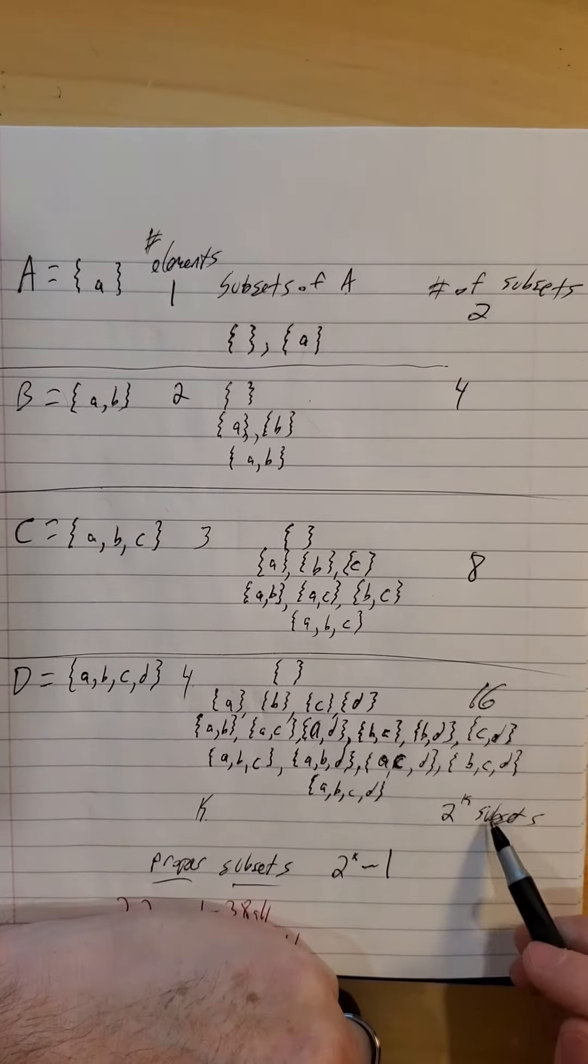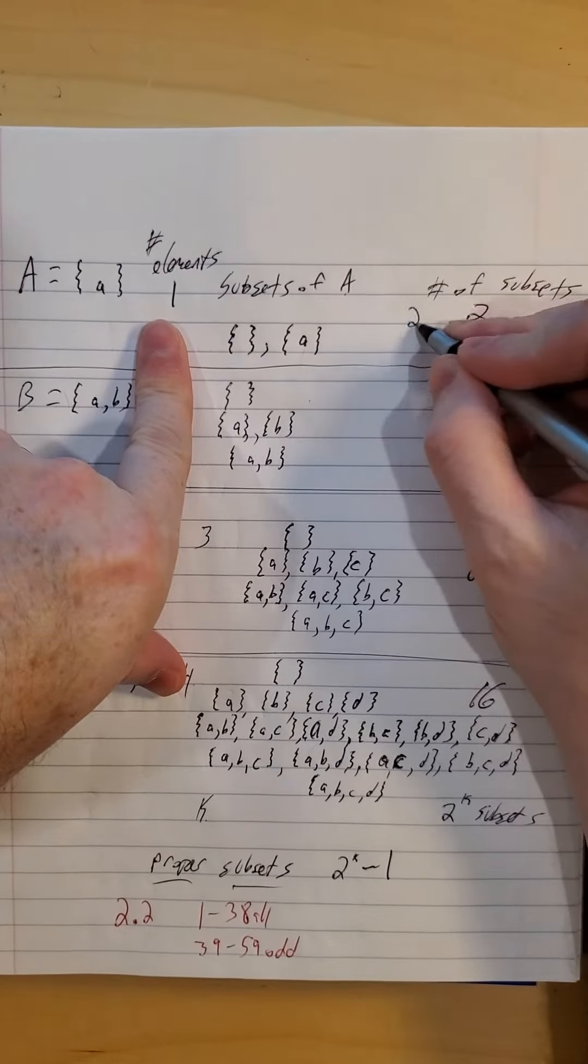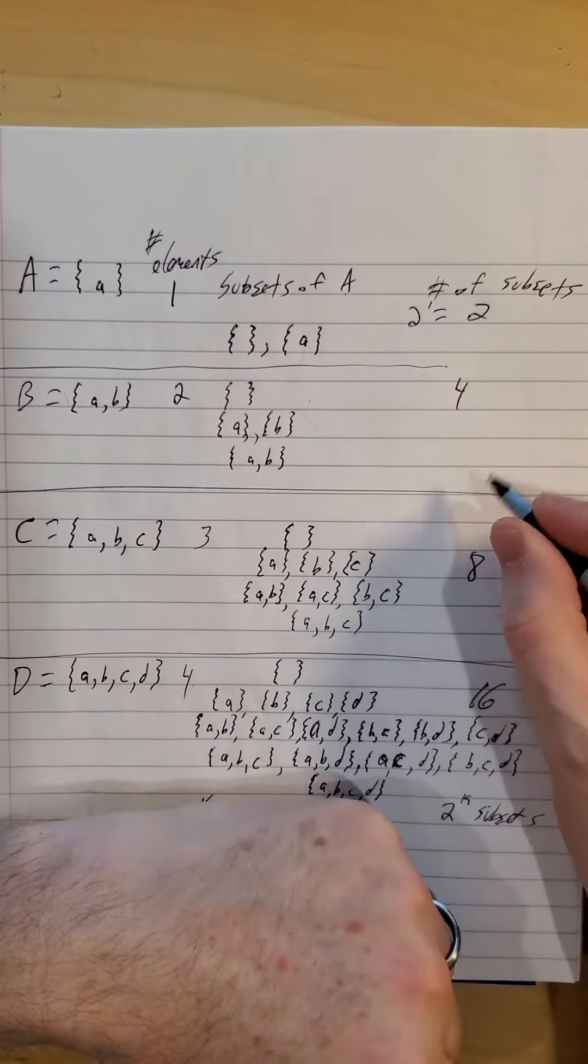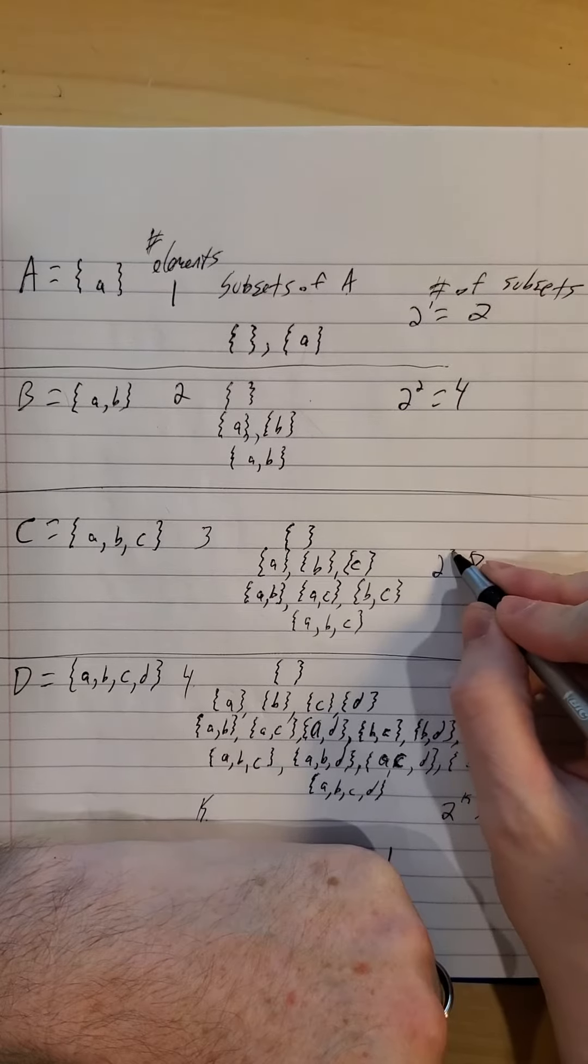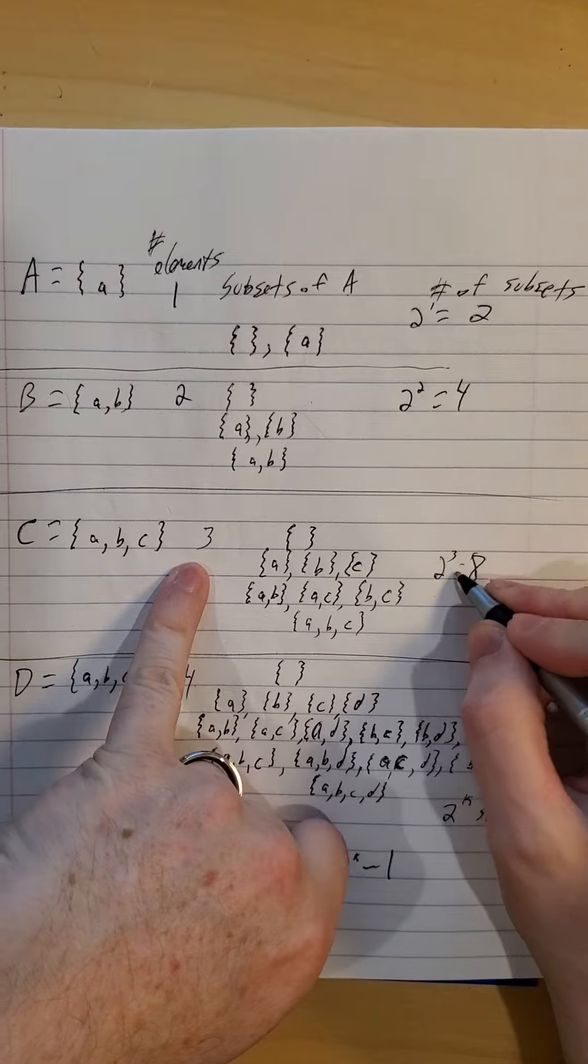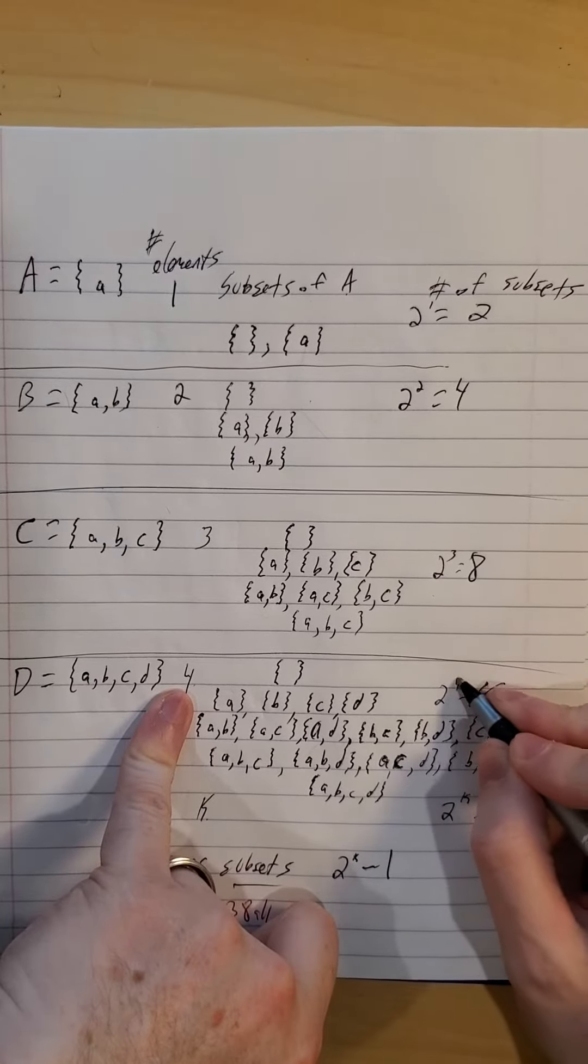So one element, two to the first subsets; two elements, two to the second subsets; three elements, two to the third subsets; four elements, two to the fourth subsets.